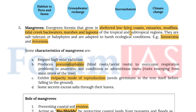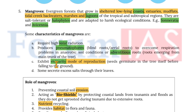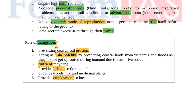Mangroves are evergreen forests that grow in sheltered low-lying coasts, estuaries, mudflats, tidal creeks, backwaters, marshes and lagoons of tropical and subtropical regions. They are salt-tolerant halophytes adapted to harsh ecological conditions, e.g. Sonneratia and Avicennia. Characteristics include: requiring high solar radiation; producing pneumatophores (blind roots and aerial roots) to overcome respiration problems in anaerobic soil; adventitious roots emerging from the main trunk; viviparity reproduction where seeds germinate on the tree before falling; and some species secreting excess salt through leaves. Roles include preventing coastal soil erosion, acting as bio-shields against tsunamis and floods, nutrient recycling, providing habitat, supplying wood, fuel and medicinal plants, and employment to locals.